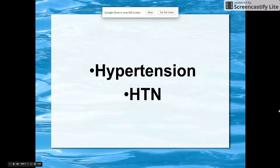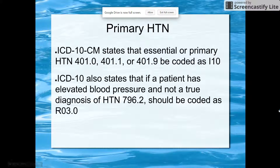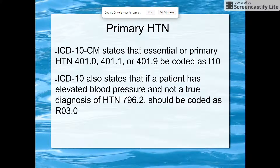Hypertension. Hypertension in ICD-9 codes are 401.0, 401.1, and 401.9. You should be able to convert those to ICD-10.